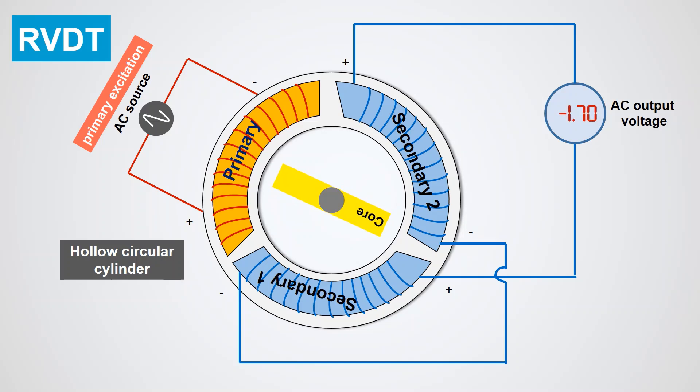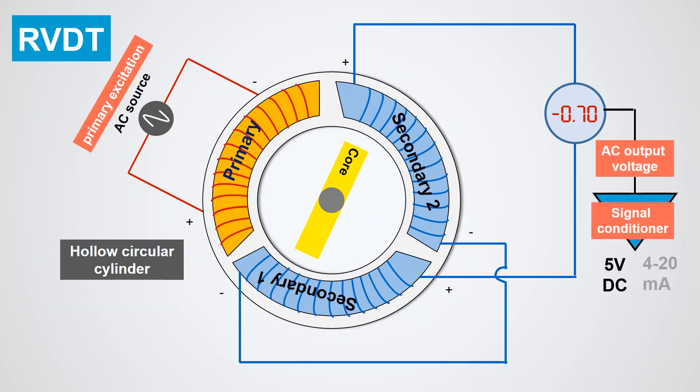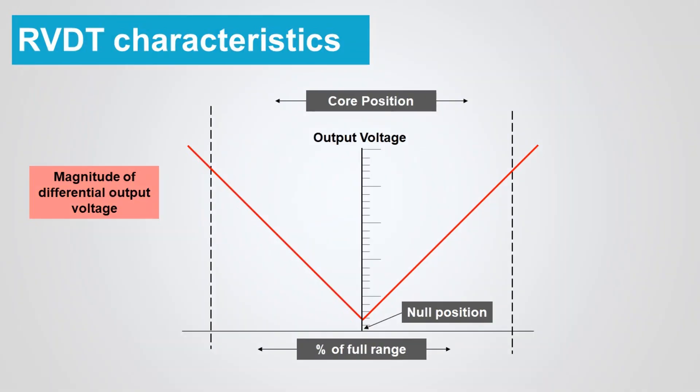A signal conditioning circuit is housed inside the RVDT structure and is required to convert the output to either 5V DC or 4 to 20mA, whichever format is compatible with your data acquisition. The magnitude of the differential output voltage varies with the core position. The value of output voltage at maximum core displacement from null depends upon the amplitude of the primary excitation voltage and the sensitivity factor of the particular RVDT.